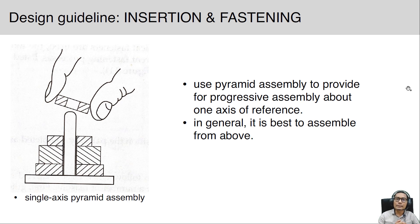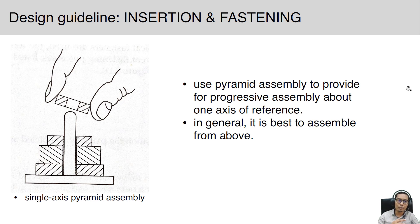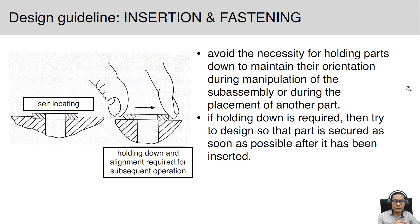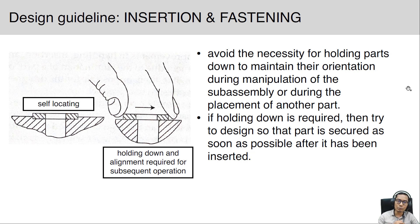Another design guideline on insertion and fastening: use pyramid assembly to provide for progressive assembly about one axis of reference. In general, it is best to assemble from above using a single-axis pyramid assembly, as shown in the figure. Regarding self-locating: avoid the necessity for holding parts down to maintain their orientation during manipulation of the sub-assembly or during replacement of another part. If holding down is required, design so that the part is secured as soon as possible after it has been inserted.